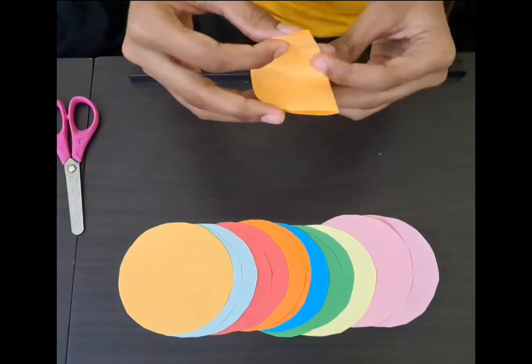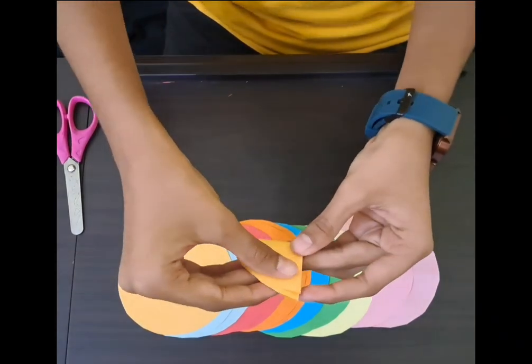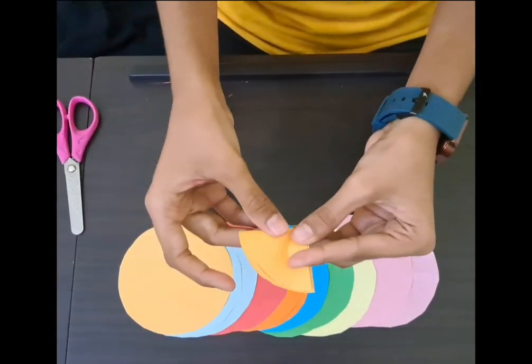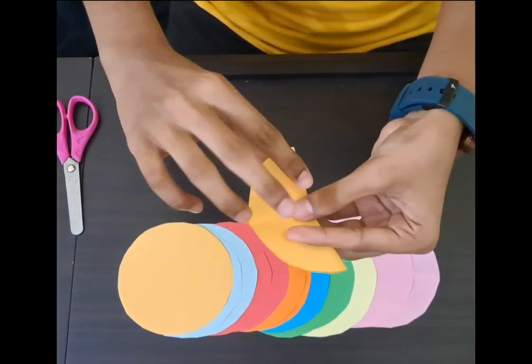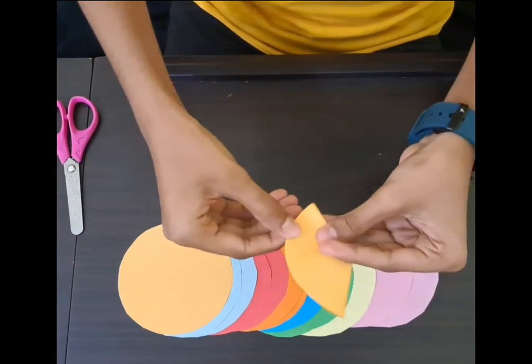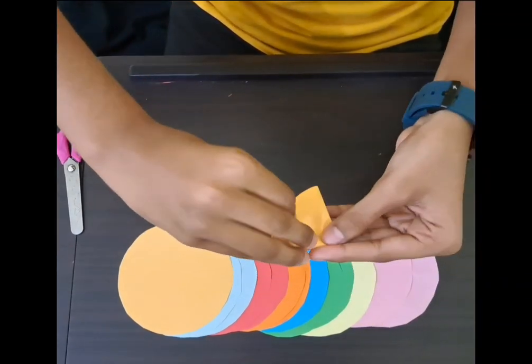Again fold it into half. This half is the most important half which we deal with. This line should be clearly seen. Now again fold so that this end meets the line.